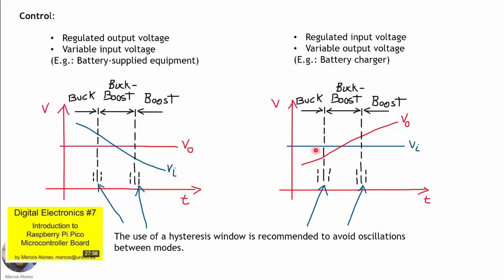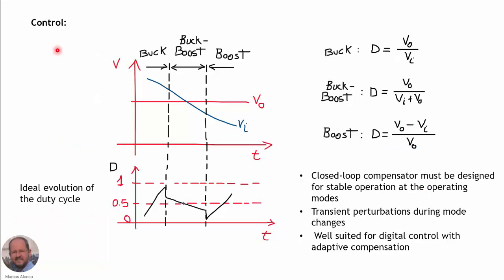We can also have the situation of a regulated input voltage with a variable output voltage — for example, a battery charger. When the battery is discharged the output voltage is low, and as we charge the battery the voltage increases. Again, we operate in buck mode when the output is lower than the input, in buck-boost mode when they are similar, and in boost mode when the output voltage is much higher than the input voltage.